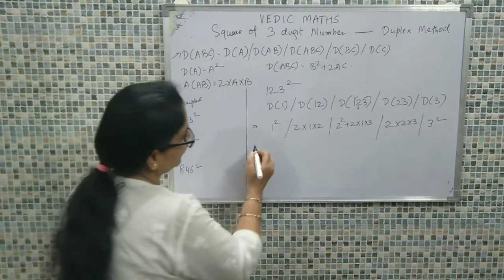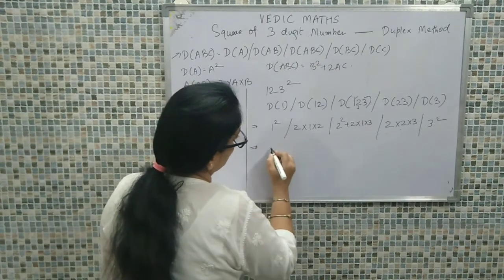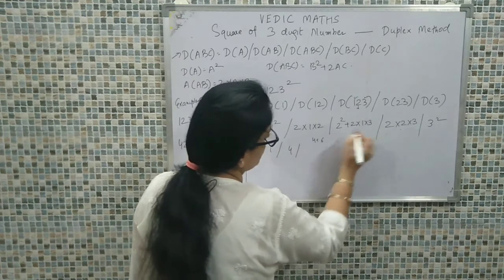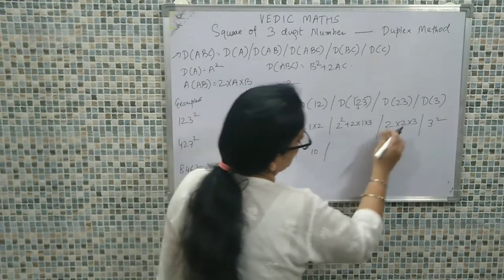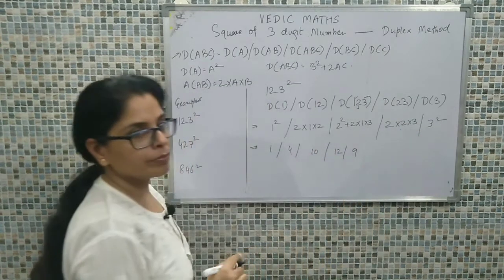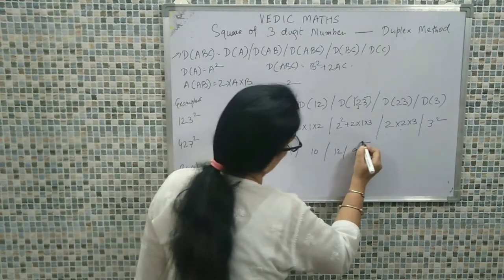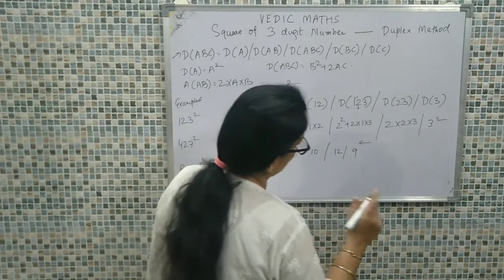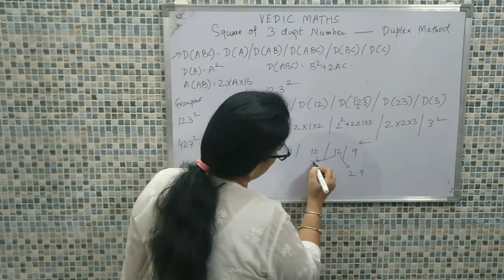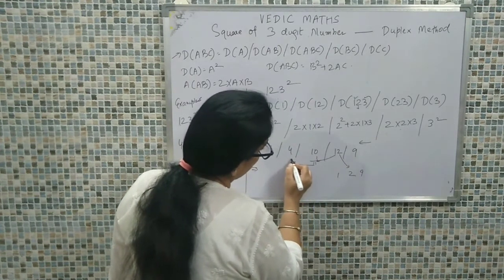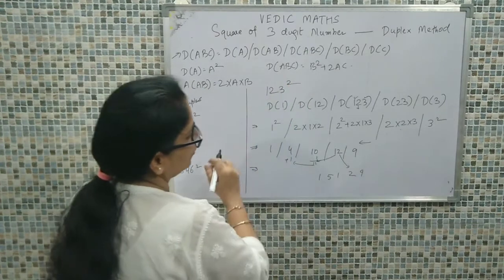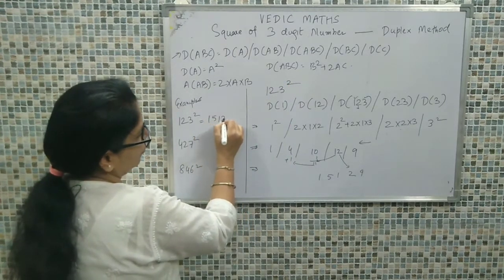Let's simplify the values: 1 squared = 1; 2 times 1 times 2 = 4; 2 squared plus 2 times 1 times 3 = 4 + 6 = 10; 2 times 2 times 3 = 12; and 3 squared = 9. Retaining only a single digit from the right: 9, carry 0; 12+0=12, keep 2 carry 1; 10+1=11, keep 1 carry 1; 4+1=5; and 1 at the far left. So the square of 123 is 15129.